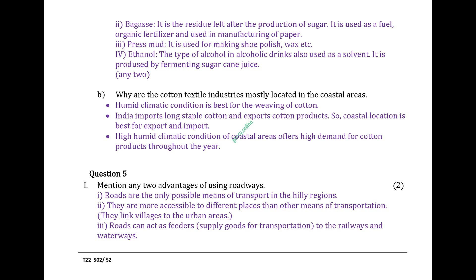Why are cotton textile industries mostly located in coastal areas? Humid climatic conditions are best for weaving of cotton. India imports long-staple cotton and exports cotton products, so coastal location is best for export and import. High humid conditions of coastal areas offer high demand for cotton products throughout the year.